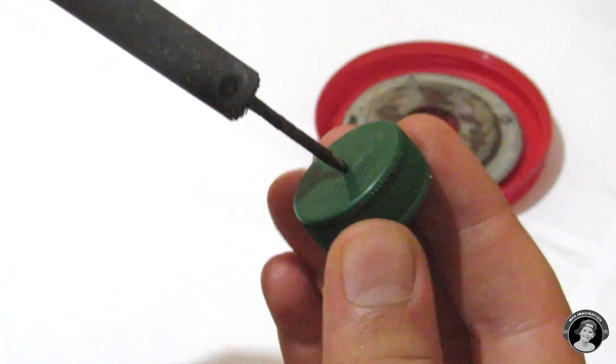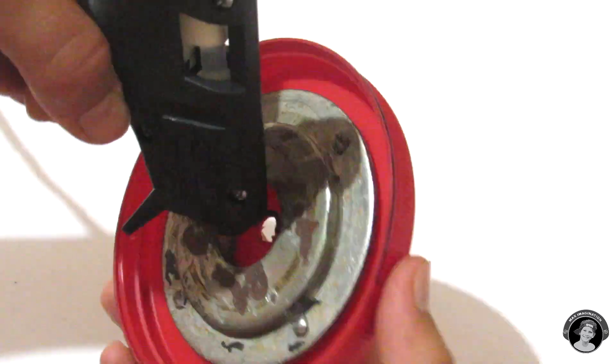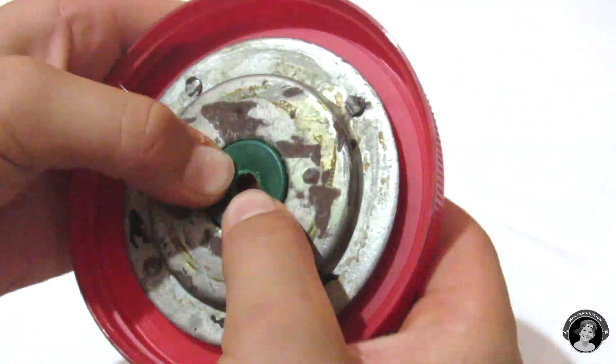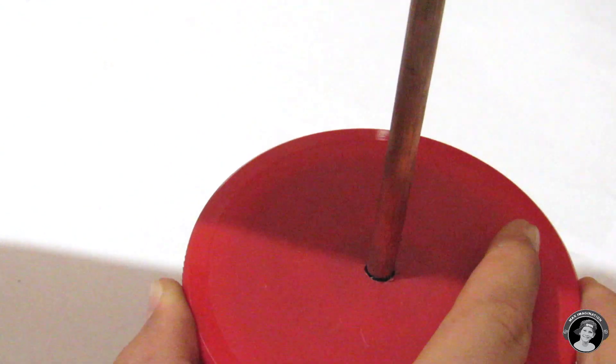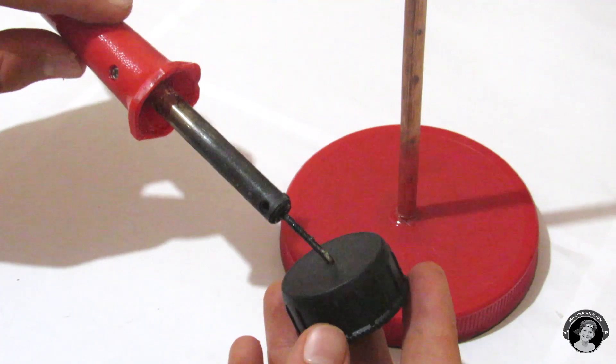This bottle cap is just for the stability of the rod. Glue the rod in place and then attach a bigger bottle cap on the top.